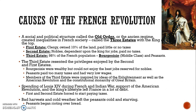The French held their own revolution. The social and political structure in France was known as the Old Order, or the ancient régime, which created inequalities through three estates. The first estate, right under the king, was mainly clergy — they owned about 10% of the land and paid virtually no taxes. The second estate was mainly nobles who also paid no taxes. The third estate was about 98% of the French population — the bourgeoisie, or middle class, and the peasants. The third estate resented the privileges of the first and second estates, particularly tax exemptions, while peasants paid too many taxes on very low wages.